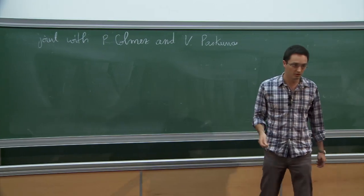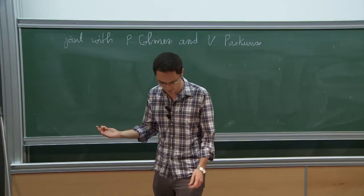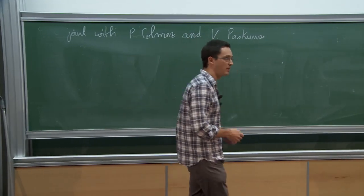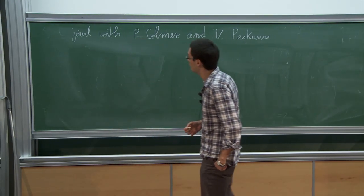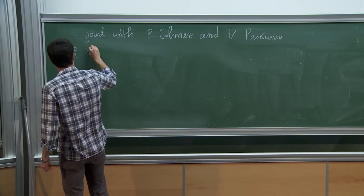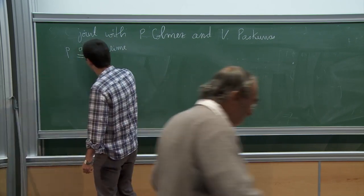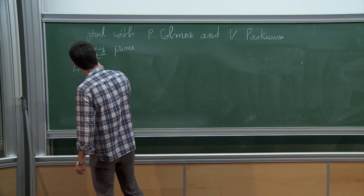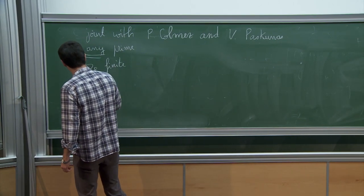The goal is to explain how the first talk implies the bijectivity of the correspondence between GL2 of Qp Banach-space representations and two-dimensional absolutely irreducible Galois representations. P is any prime — I will underline it even twice. L will be a finite extension of Qp, and G will be the group GL2 of Qp.